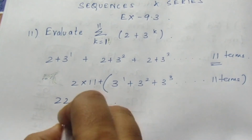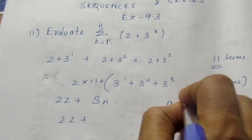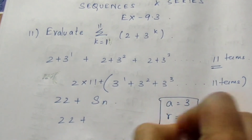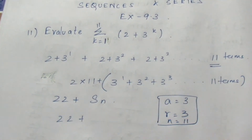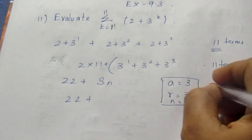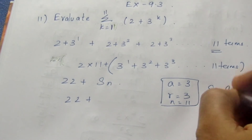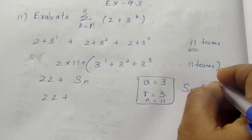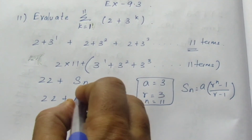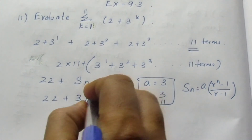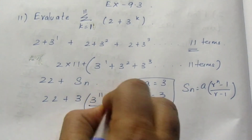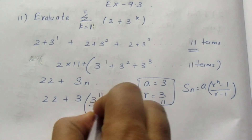So for GP, A is equal to 3, R is equal to 3 squared by 3 which is 3, and N is equal to 11. So we know A, R, and N. We can directly substitute into the formula for S_N. The S_N formula, since R is bigger, is A into R power N minus 1, divided by R minus 1. A is 3, N is 11, so it becomes 3 into 3 power 11 minus 1, divided by 3 minus 1.